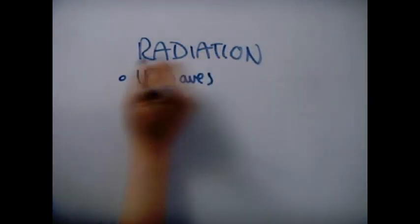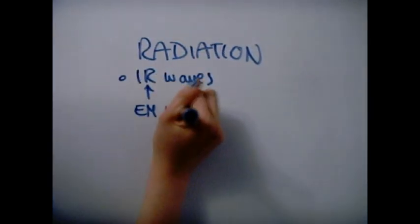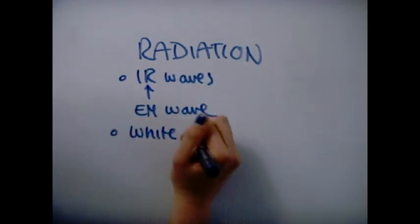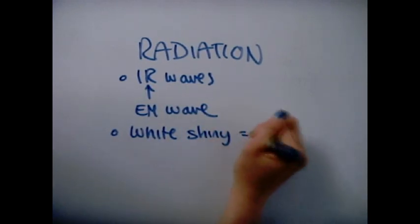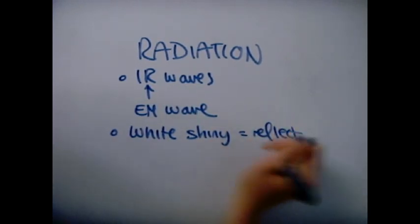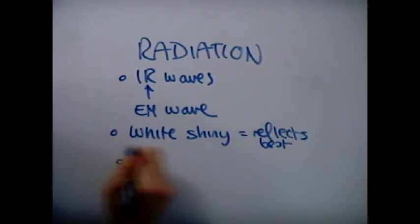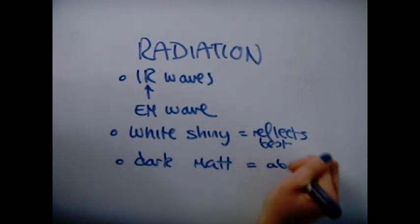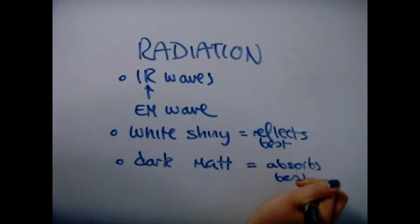Radiation: All things radiate infrared, which is an EM wave. They can be reflected and absorbed. White shiny objects reflect IR waves the most, and black matte objects absorb them the most. The more infrared something absorbs, the more energy is transferred. Therefore, the temperature increases.